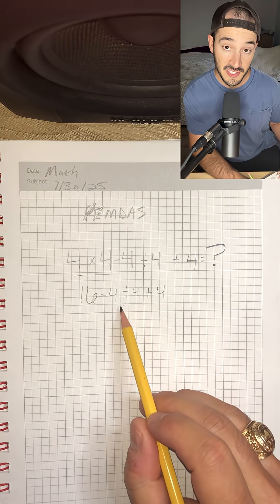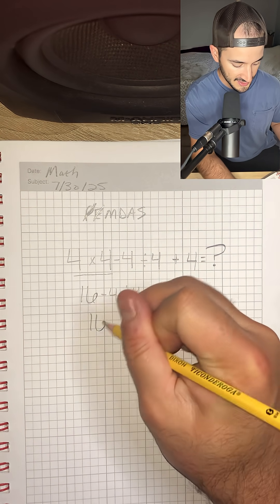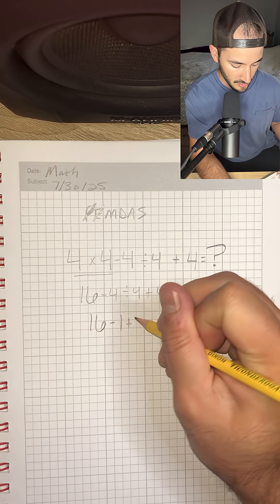And now we still have division to do. So we're going to do 4 ÷ 4, which is 1. So 16 - 1 + 4.